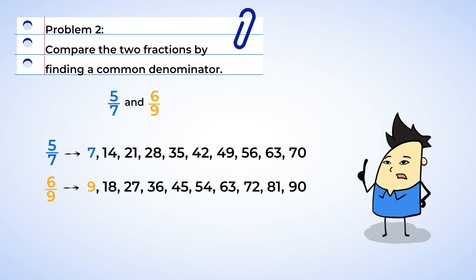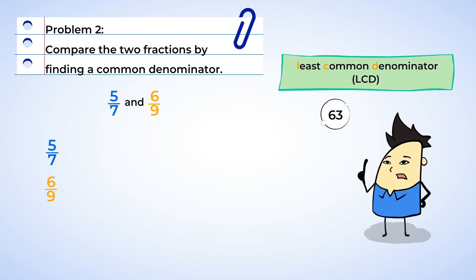Now let's take a look. Seven and nine only have sixty-three in common. So the LCD is sixty-three. Next, to multiply each fraction and change the denominators into sixty-three. Well, seven times nine is sixty-three, so we need to multiply five-sevenths by nine over nine. And nine times seven is sixty-three, which means we need to multiply both the numerator and denominator of six-ninths by seven.